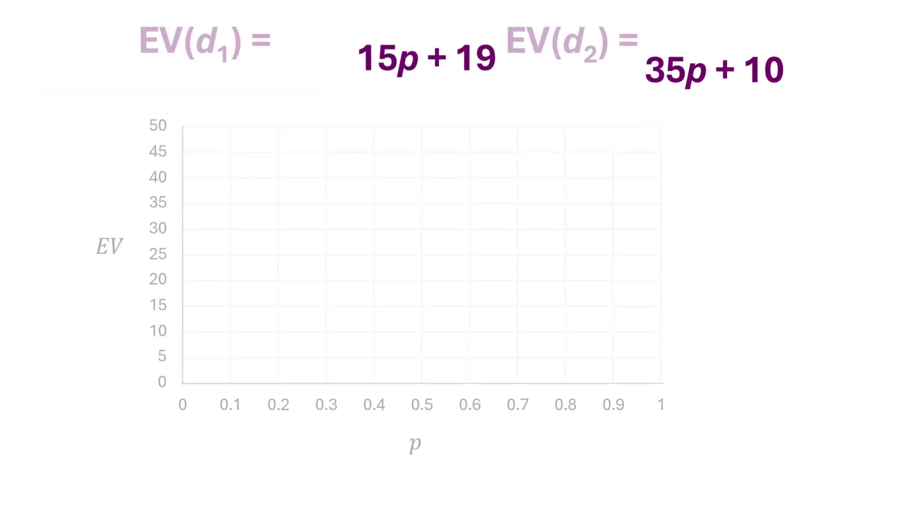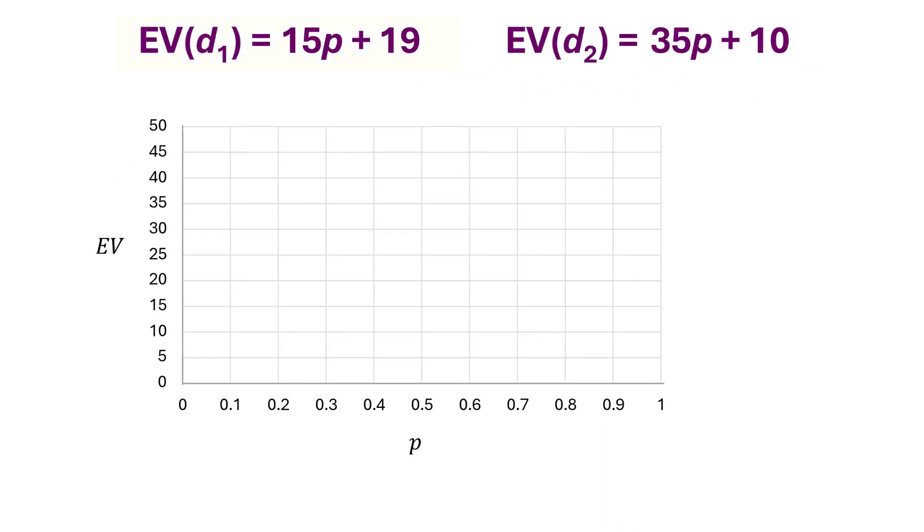We can view the sensitivity ranges graphically as follows. For D1, when P equals 0, the expected value is 19. And when P equals 1, the expected value is 34. And that's the line in blue.